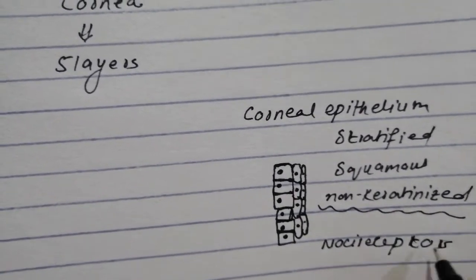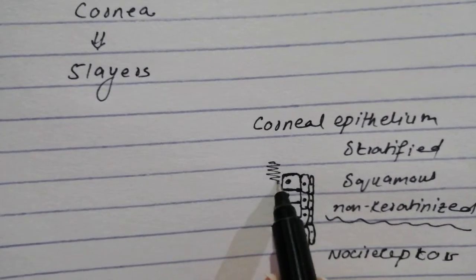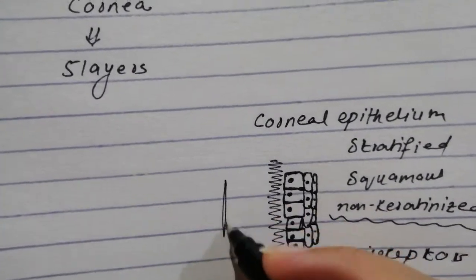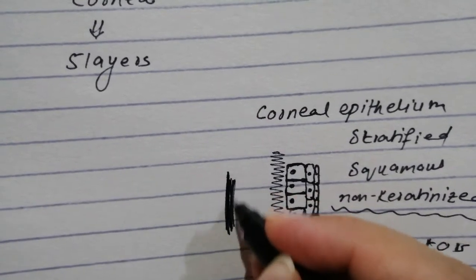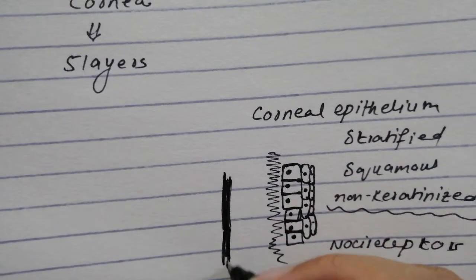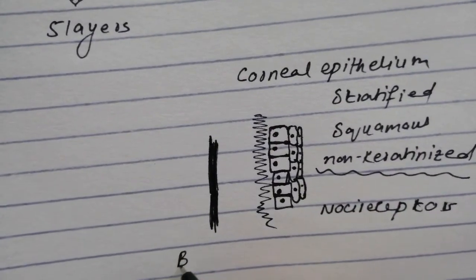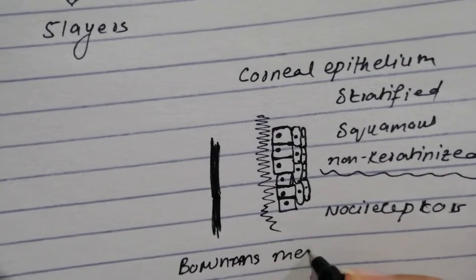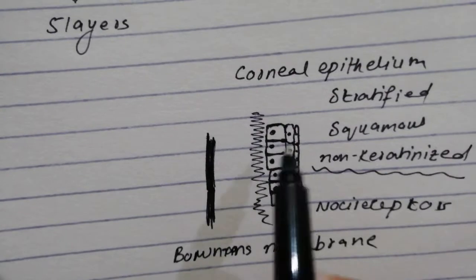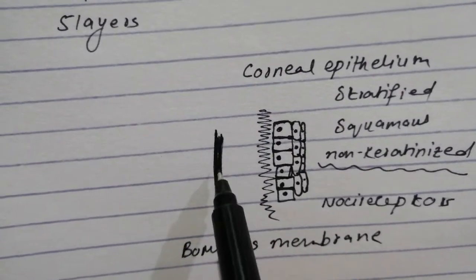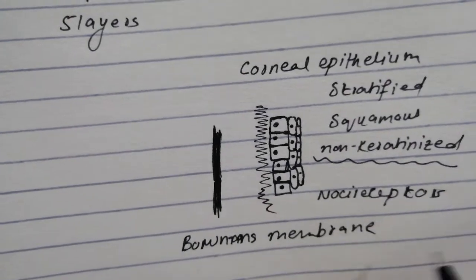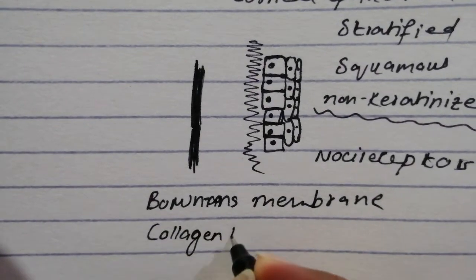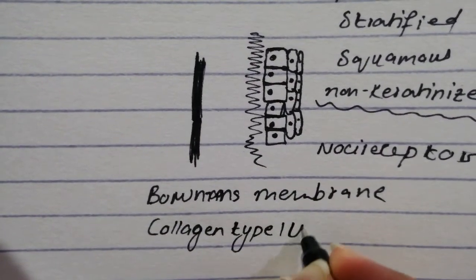Then the basal lamina of the corneal epithelium actually forms something which is known as the Bowman's membrane. A better way of showing that would be to show a homogenous mixture, something that is homogenous. Bowman's membrane is the basal lamina of the corneal epithelium and it's homogenous like you would expect, and like any basal lamina will have collagen type IV fibrils.